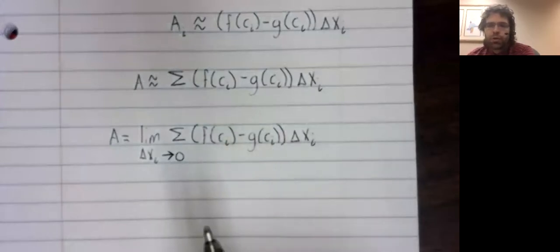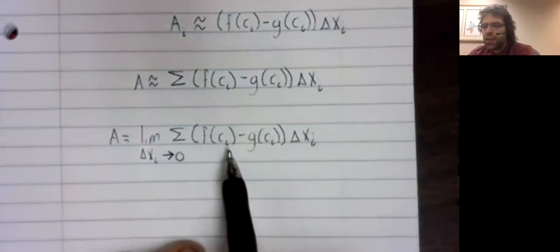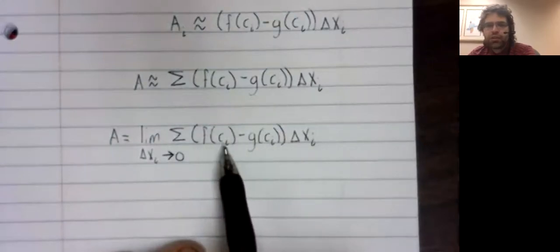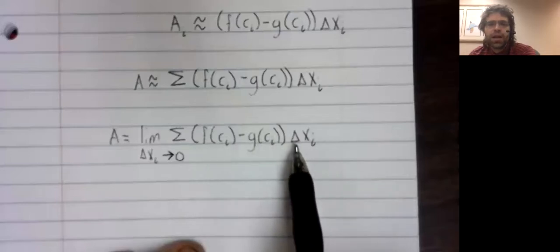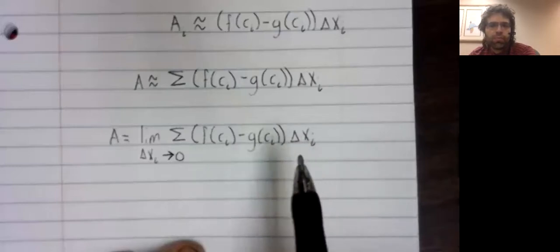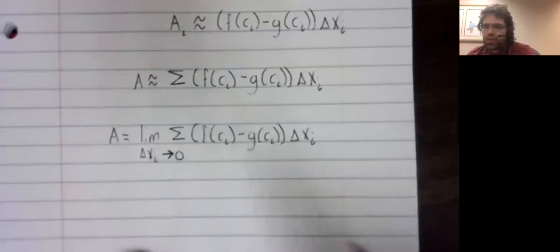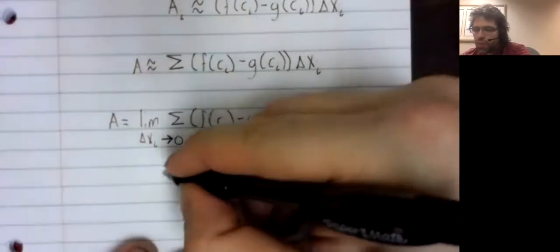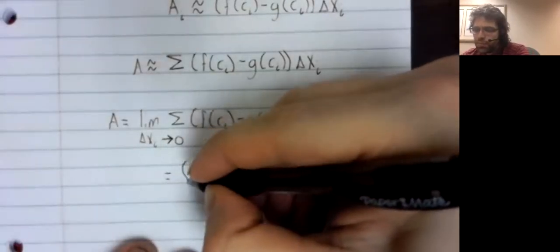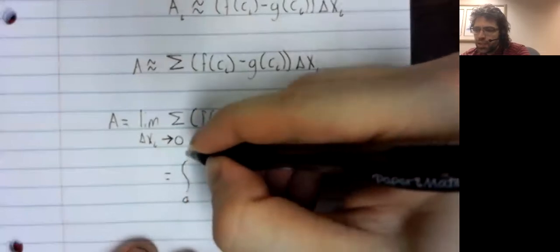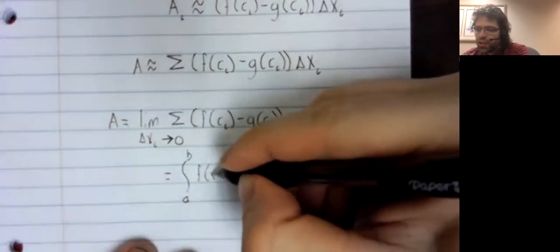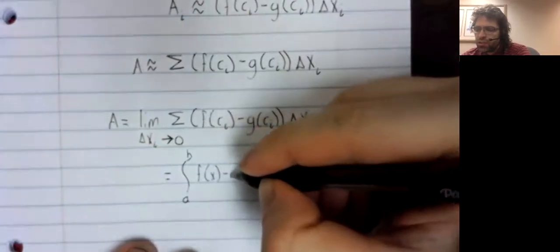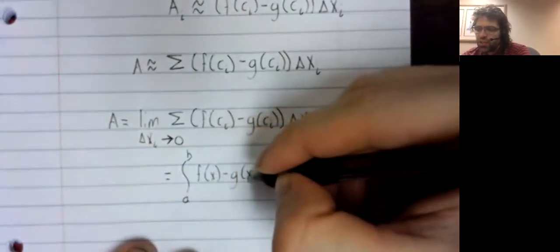And this sum is a Riemann sum. Remember to be a Riemann sum, we need a function evaluated at a point in the interval times the length of the interval. And the limit of a Riemann sum is the definite integral.